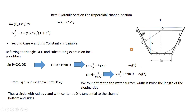Since OC = y, if we draw a circle centered at O with radius y, it will be tangent to the sloping sides and the bottom — that is the inscribed circle of the best hydraulic section. If you have any questions, please let me know in the comments and I will answer as soon as possible. I hope this is helpful — have a nice time.